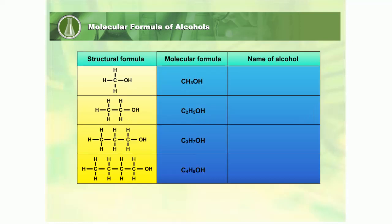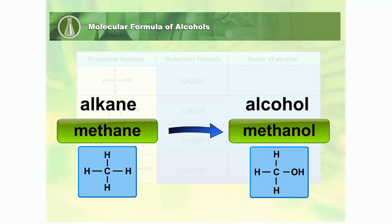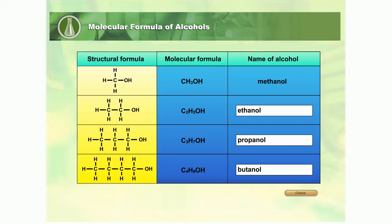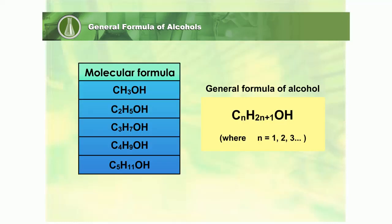Naming alcohol is about the same as naming an alkane. Alkane with one carbon atom is called methane. Alcohol is named by replacing the last alphabet E of alkane with O-L. The general formula of alcohol is CnH2n+1OH, where N is a whole number starting from 1.